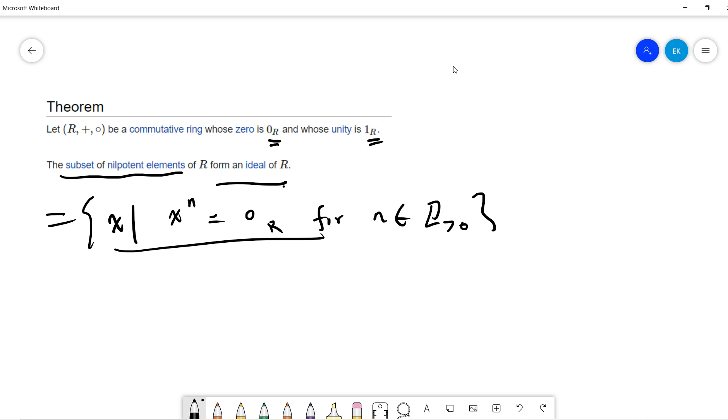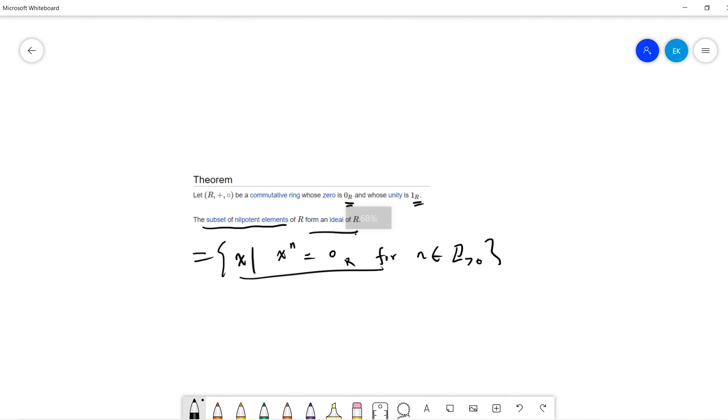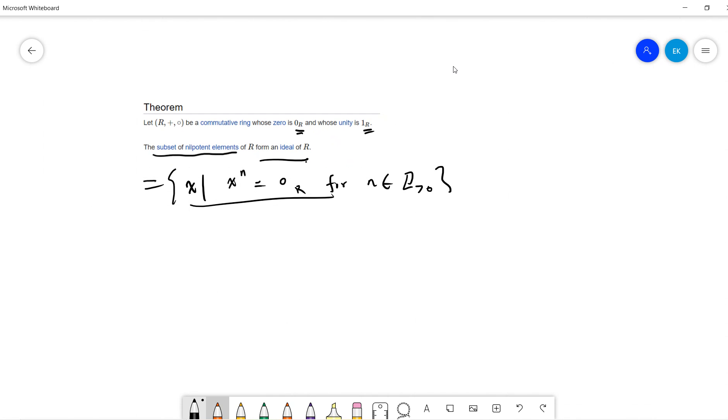We'll form an ideal. To prove it's an ideal, we only need to check two things. Let's call it I.